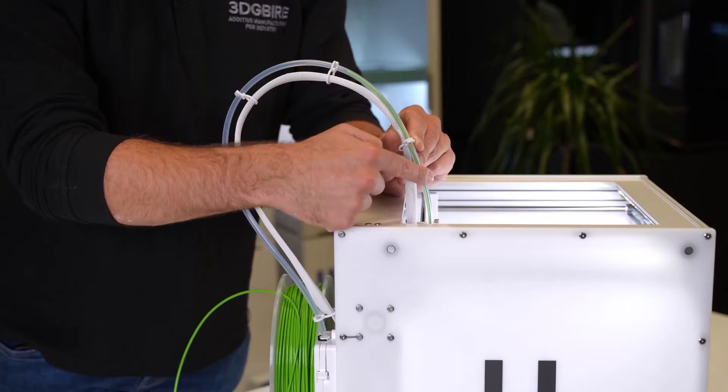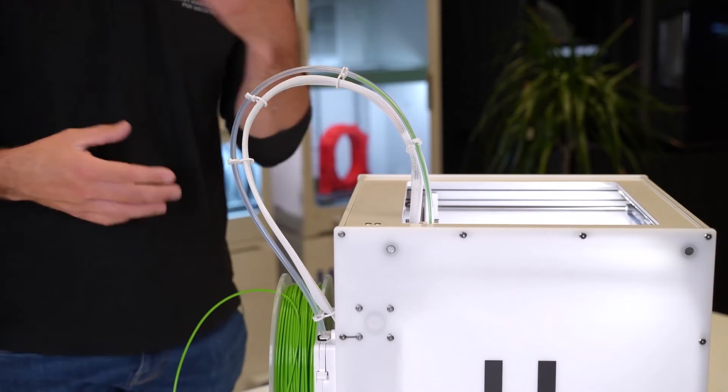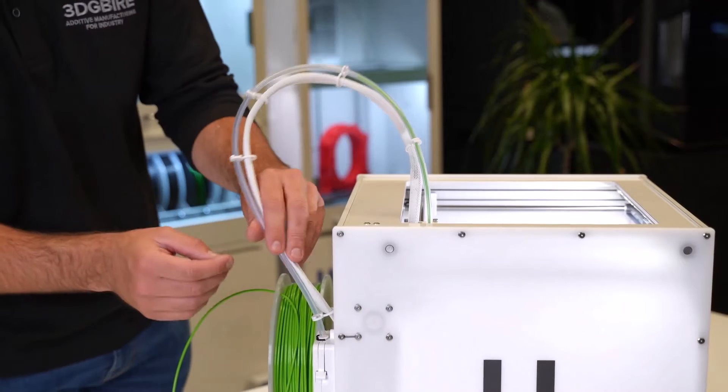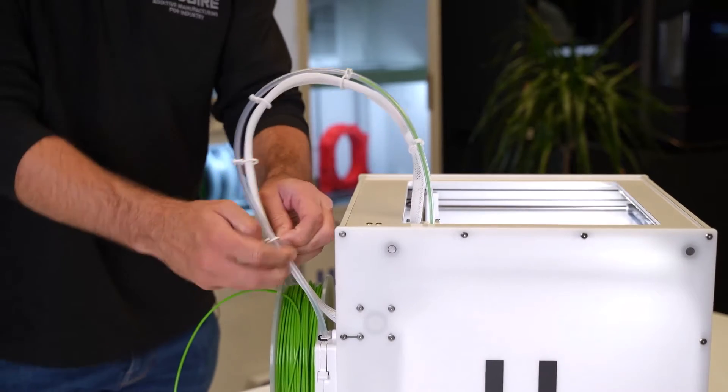As you can see, we've got material stuck in here, so we need to take the tube away and look at how to clean it out. First, we need to remove these clips because we don't want to cause any damage to the cables inside.